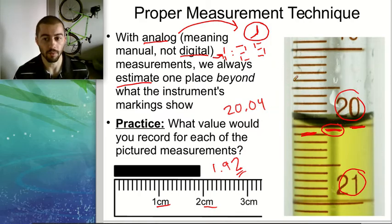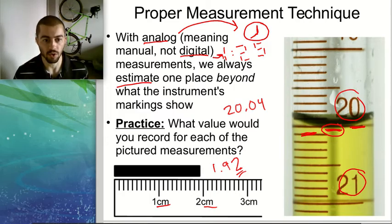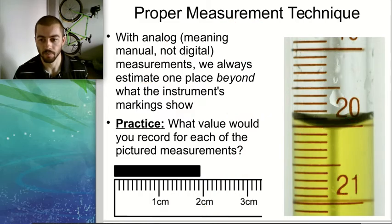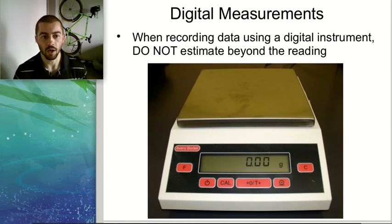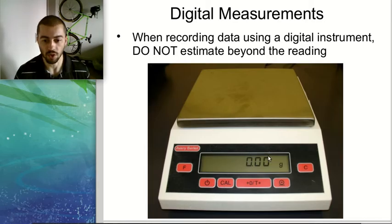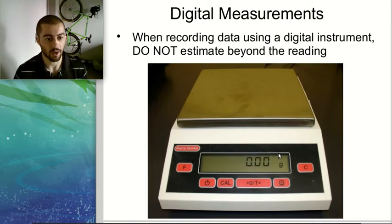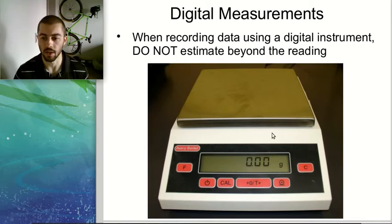With analog measurements, it's important to remember you always have to estimate one place beyond whatever you're directly shown by the instrument. With digital measurements, when we have a digital readout, we do not estimate at all. Whatever the digital measurement shows us, that's our exact measurement.